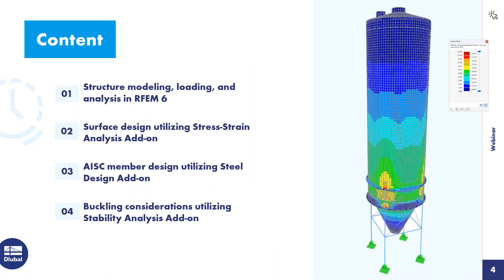Regarding the content over the next hour today, we will be partially modeling the structure on the right-hand side, as well as loading and running a full analysis within our base FEA program RFEM 6. After the analysis, we'll take it a step further to perform surface design utilizing the stress-strain analysis add-on, which is code independent and provides a stress design ratio for all the surfaces. We'll then move on to AISC member design at the base of the structure using the steel design add-on. Finally, we'll talk about buckling considerations utilizing our structure stability analysis add-on.